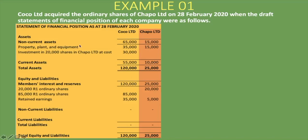Like in the previous lesson, the investment in the subsidiary by the parent company appears in the non-current assets section of the balance sheet. You can see here: investment in 20,000 shares in Chapel Ltd — 30,000 Rand. So the parent company has paid 30,000 Rand for the 20,000 shares. Looking at Chapel Ltd's equity section, we can see 20,001 ordinary shares valued at 20,000 Rand.